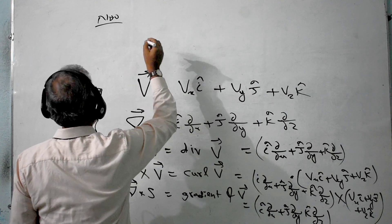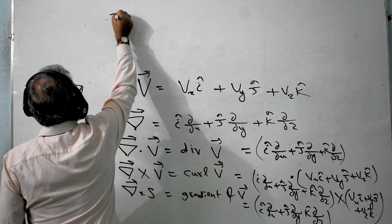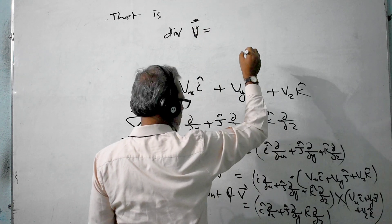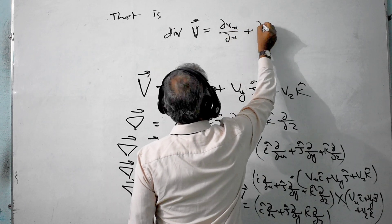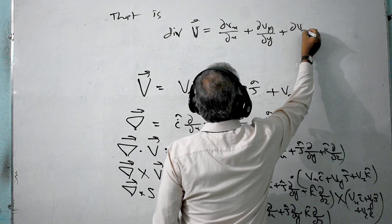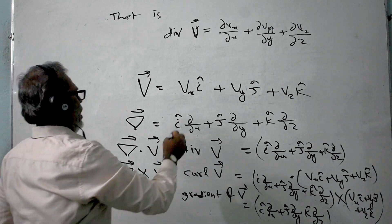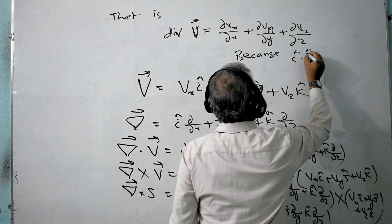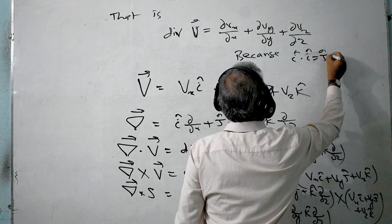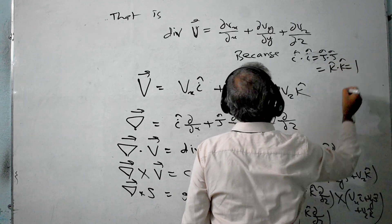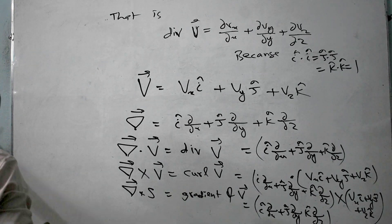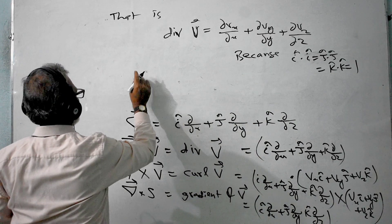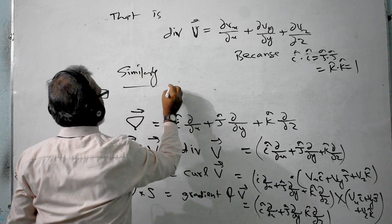Divergence of V equals: ∂Vx/∂x + ∂Vy/∂y + ∂Vz/∂z. This is because i·i = j·j = k·k = 1, and the cross dot products vanish. Similarly, we proceed to curl.